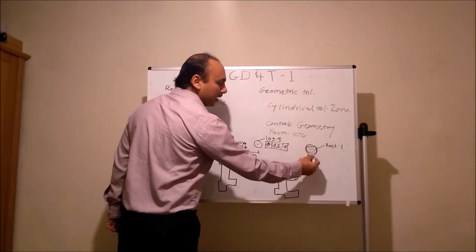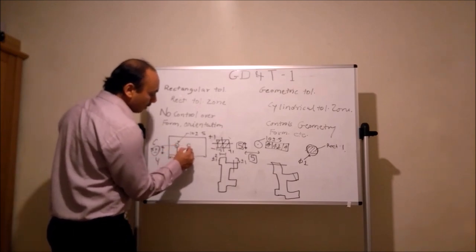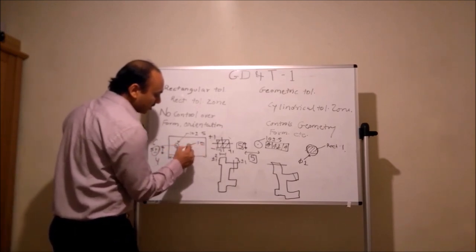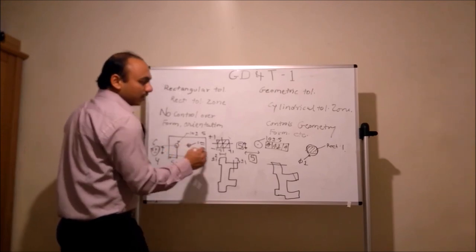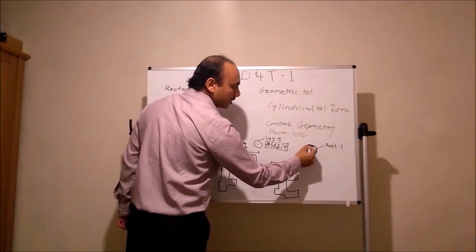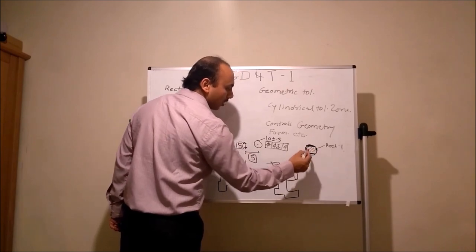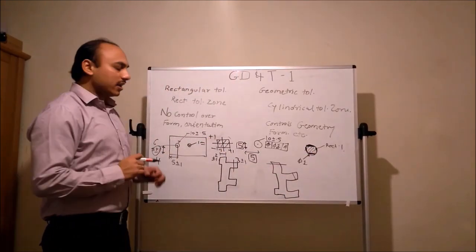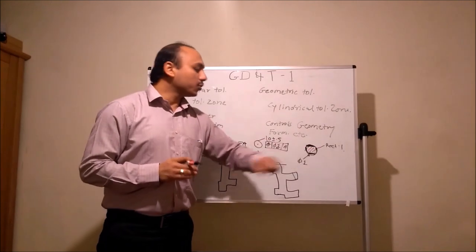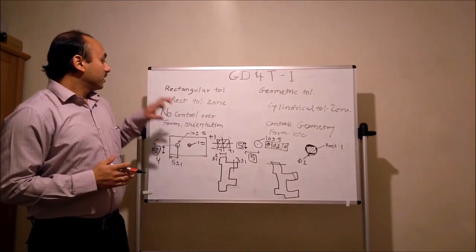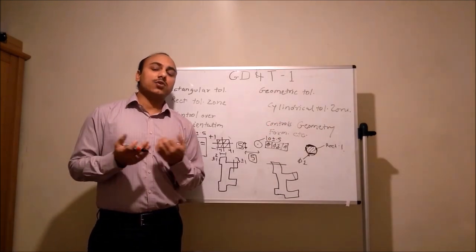If we go for the geometric tolerance scheme, the tolerance zone will be circular — a diameter of 1 mm within which the hole's axis can lie. Comparing the two, more tolerance area is added in case of geometric tolerancing, whereas rectangular tolerances were more constrained. So manufacturers will have more tolerance with geometric tolerancing.